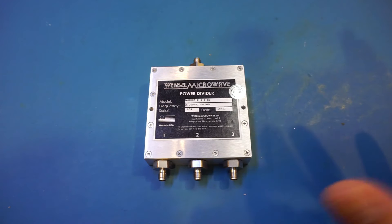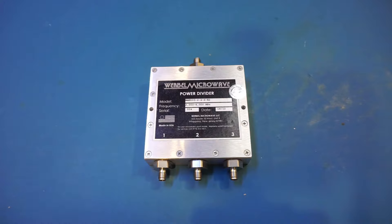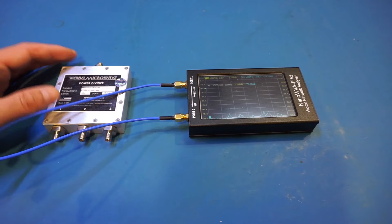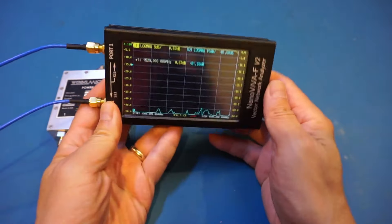I couldn't find any specifications on Orbo Microwave's website about this unit, so before we proceed with a teardown let's actually get a sense of some of the key parameters. Because the divider we have here is a 2 to 4 gigahertz one, I think my NanoVNA-H F V2 is going to be more than sufficient.